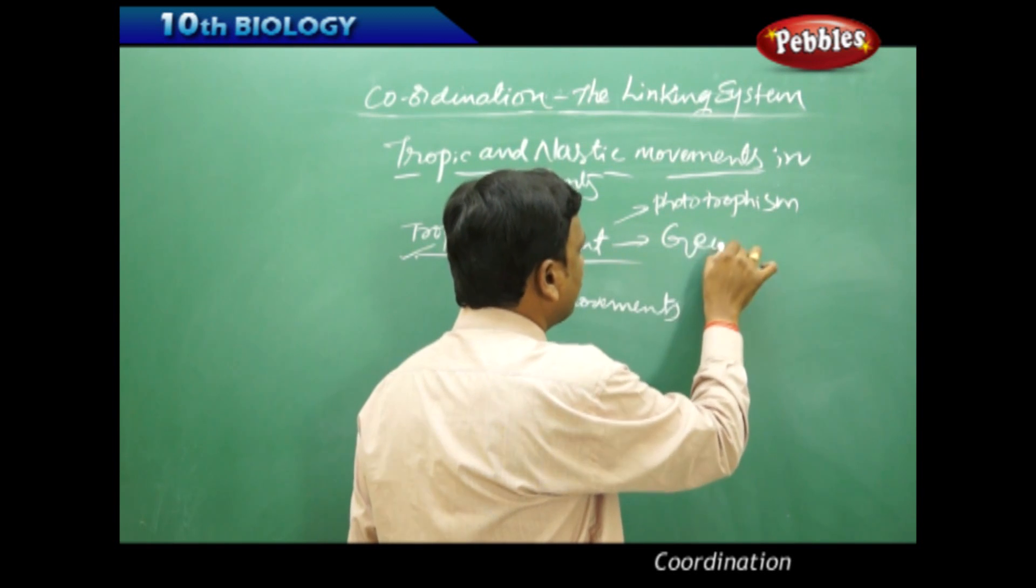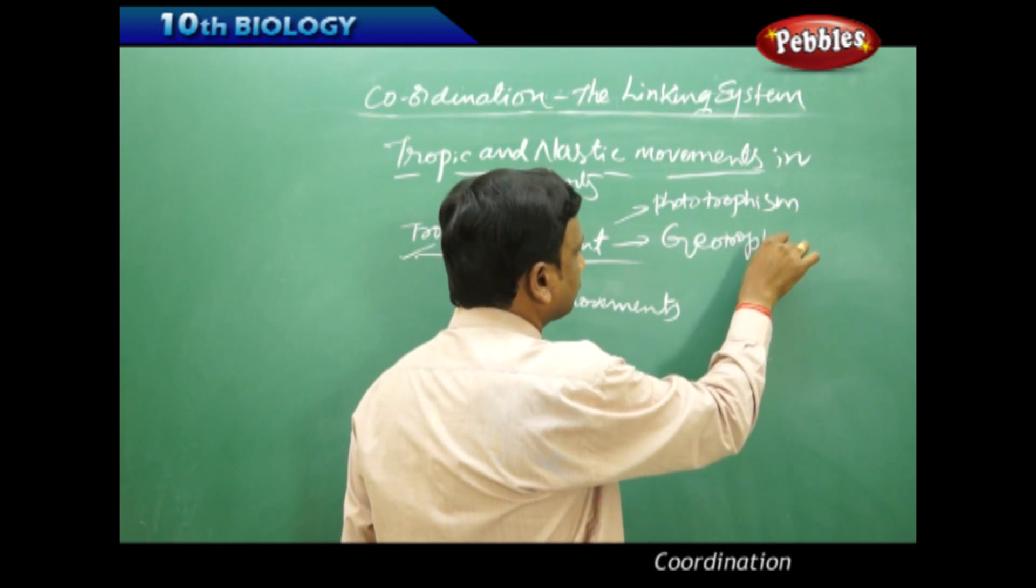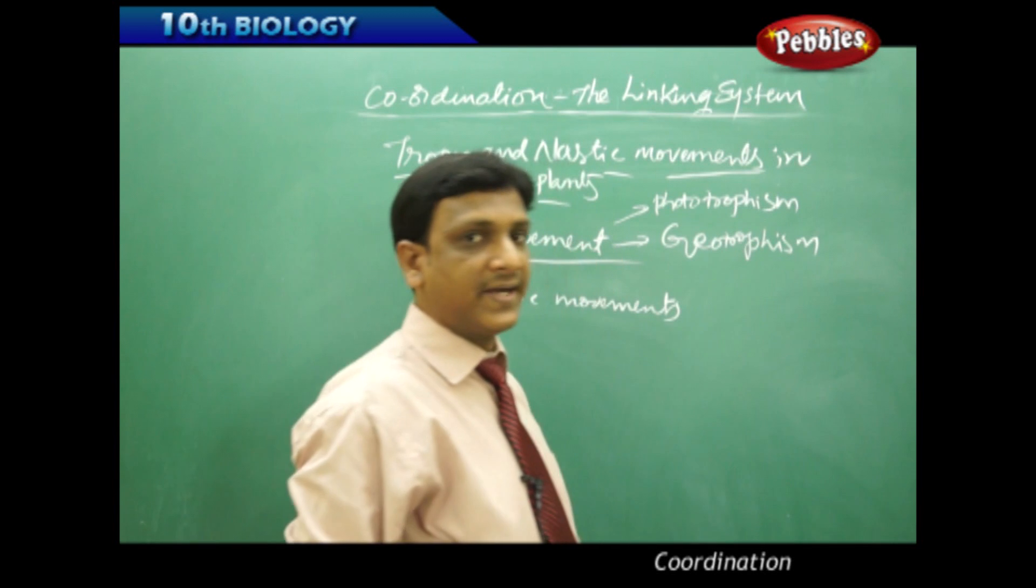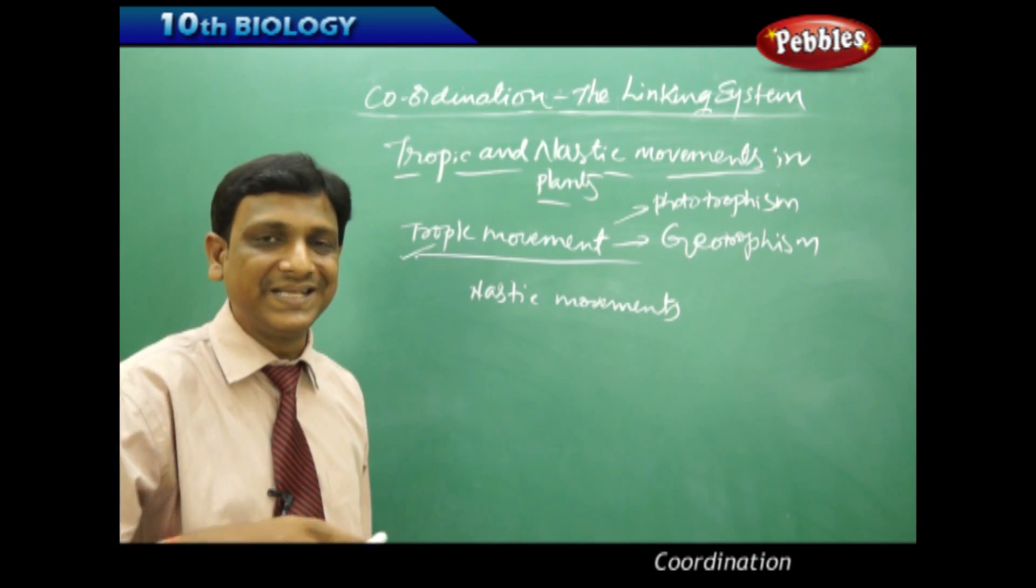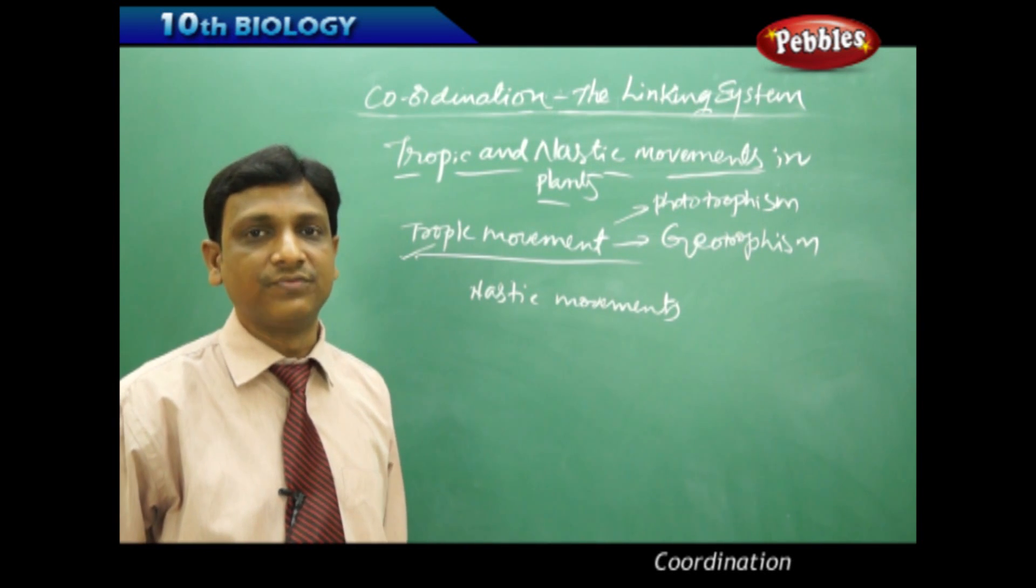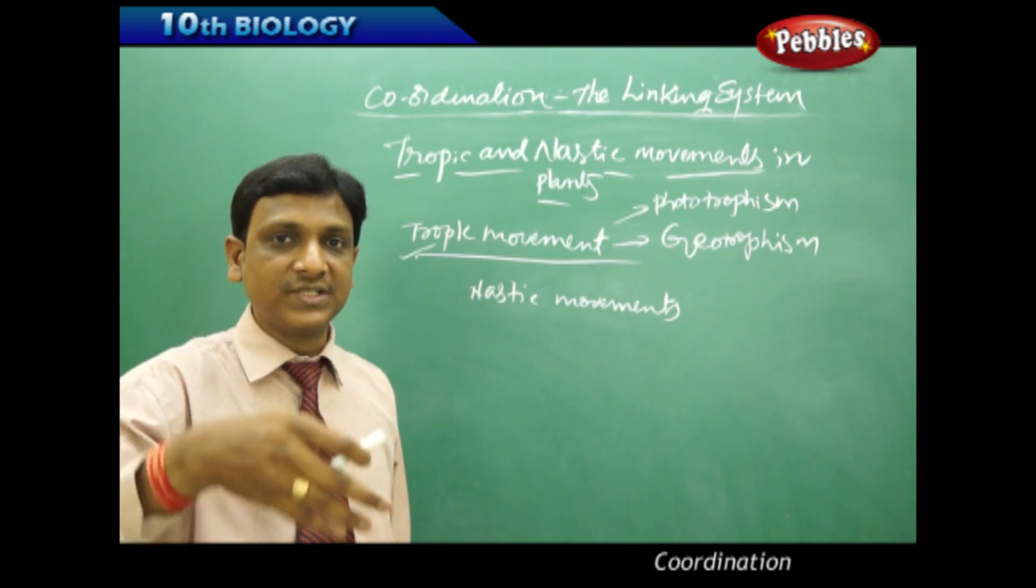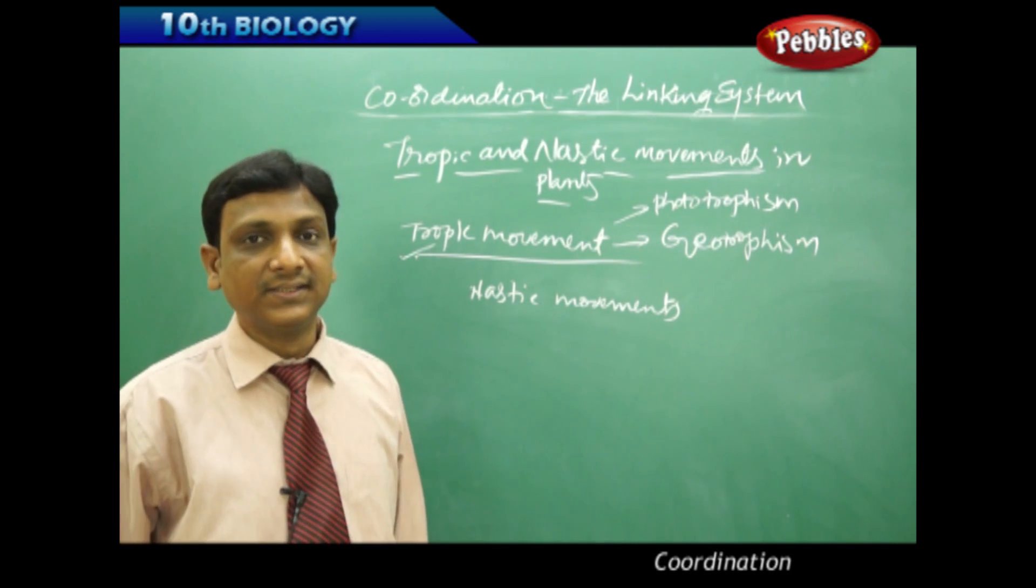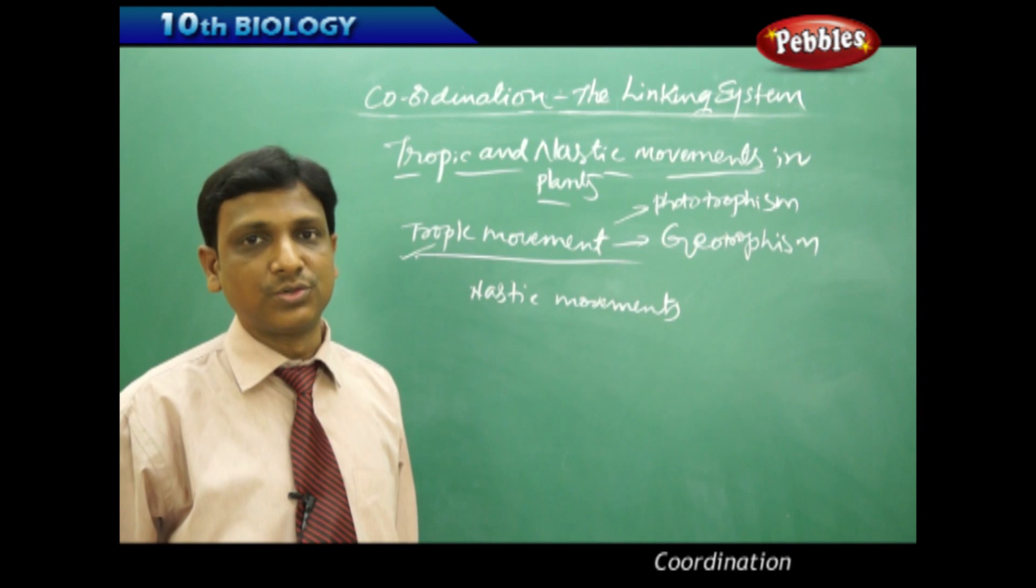The second one is Geotropism. The tendency of the roots to grow towards the earth is called Geotropism. The movement of the roots is towards the earth always. So this kind of tendency is called Geotropism.